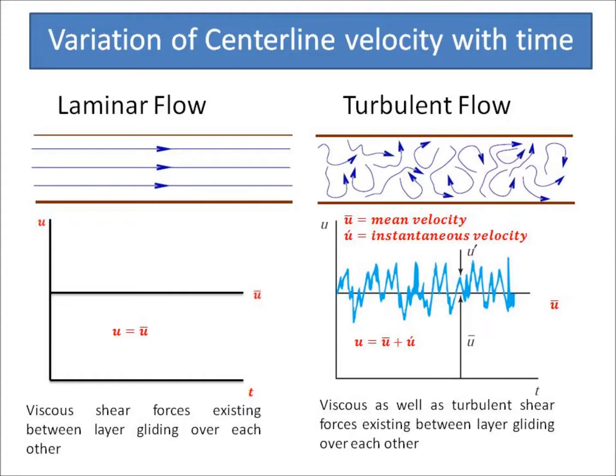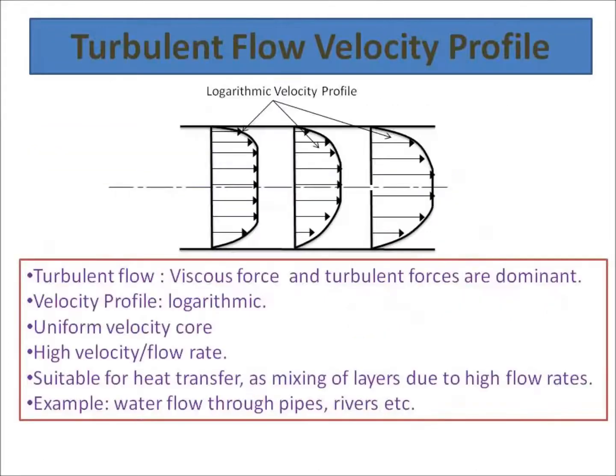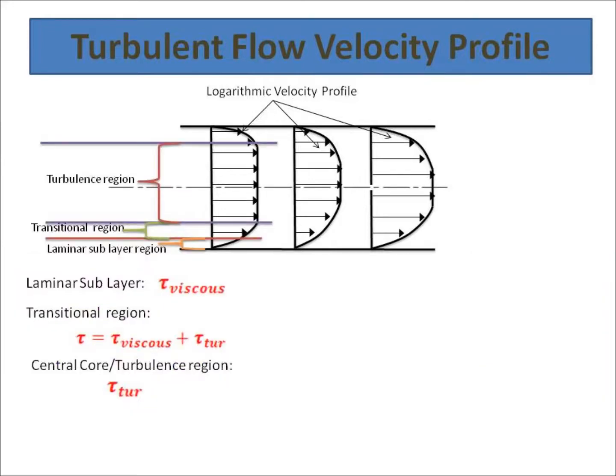The velocity profile is logarithmic. There exists a uniform velocity core at center. It occurs at high velocity and high flow rates. The mixing of layers occurs in turbulent flow, suitable for heat transfer. Examples for turbulent flow are water flow through pipes and rivers.